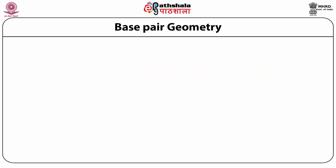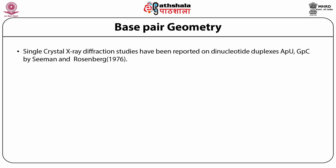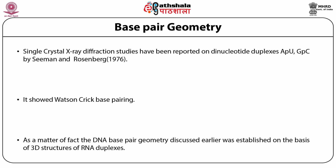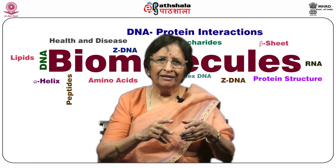Base pair geometry: single-crystal X-ray diffraction studies have been reported on dinucleotide duplexes ApU and GpC by Seeman and Rosenberg. These showed Watson-Crick base pairing. In fact, DNA base pair geometry discussed earlier was established on the basis of the 3D structure of RNA duplexes.